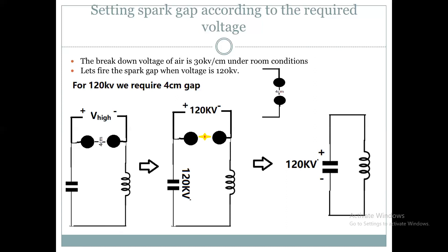ऐसे आप switching करवा सकते हैं, spark gap की settings कर सकते हैं, और capacitor को required voltage पर charge करवा सकते हैं। उस capacitor को किसी भी resistor के across discharge करवा सकते हैं अगर high voltage चाहिए, या किसी insulating material के across उसकी breakdown strength check करना चाहते हैं। Spark gap काफी ज्यादा circuits के अंदर as a switch use होता है — इसलिए यहाँ explain किया गया। इन्शाअल्लाह next video में explain करेंगे।